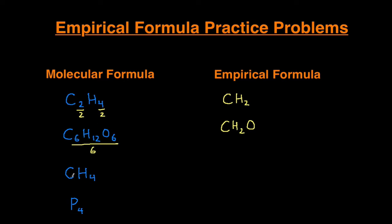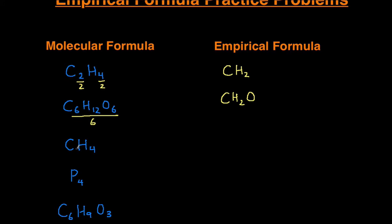Next example, CH4, methane, the gas that cows release when they fart. We have C1H4. What number can we divide 1 and 4 by that will simplify it and still give us a whole number? There isn't one. Technically you can divide it by 1, but that leaves you with the same thing, CH4. So for methane, the molecular formula is the same as the empirical formula, and that can happen.